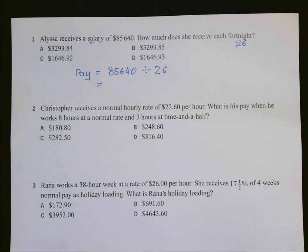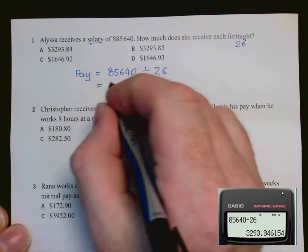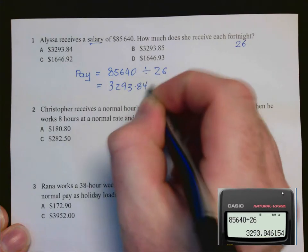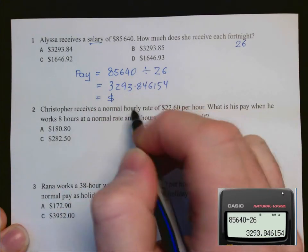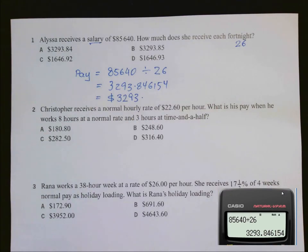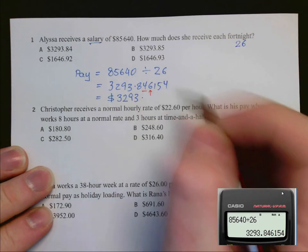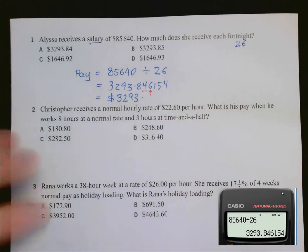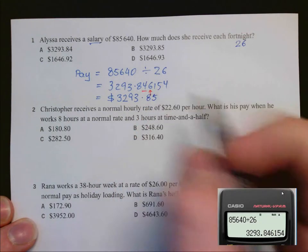So on our calculator, we're going to do 85,640 divided by 26 and we get 3,293 and some decimal places, which we can see if we round it off correctly. To round it off correctly, we're going to look at the nearest cent. So here's the cent. The number after that is greater than 5, so we're going to round that 4 up and it will become 85 cents. So the answer is B.